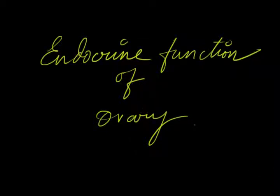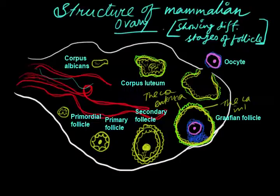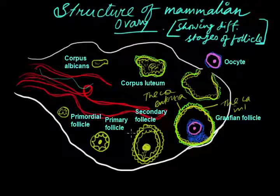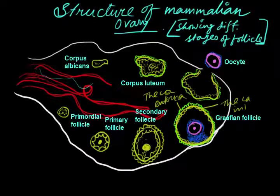Hello listeners. In this chapter we will discuss the endocrine function of ovaries. This is a rough diagram of the main gonads of the ovaries, and from this structure we can get detailed knowledge of the structure of ovaries.